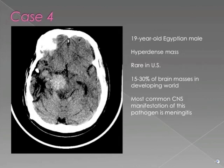In Case 4, we have an axial CT image from a 19-year-old Egyptian male who presents with a hyperdense mass in the right basal ganglia. This disease is rare in the United States, but is responsible for up to one-third of brain masses in the developing world. The most common CNS manifestation of this pathogen is meningitis. This is a case of tuberculosis resulting in a tuberculoma.